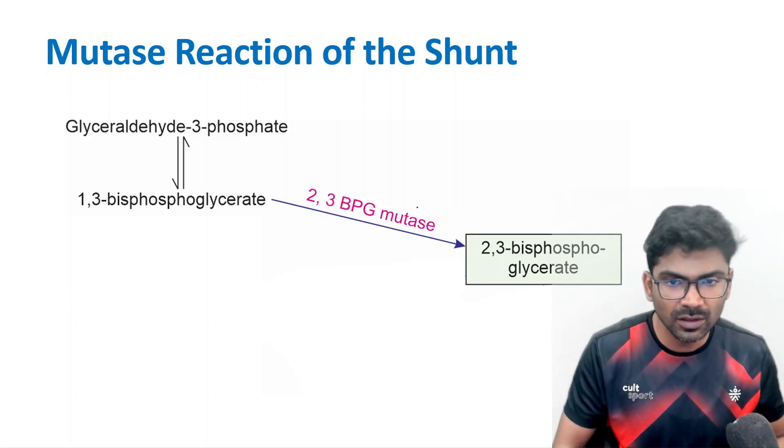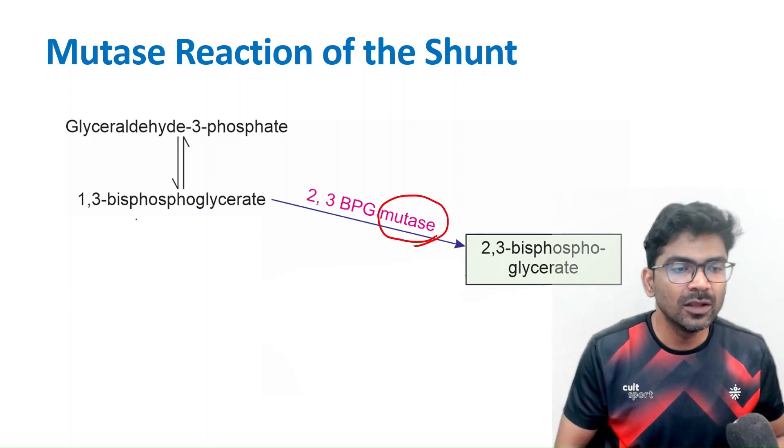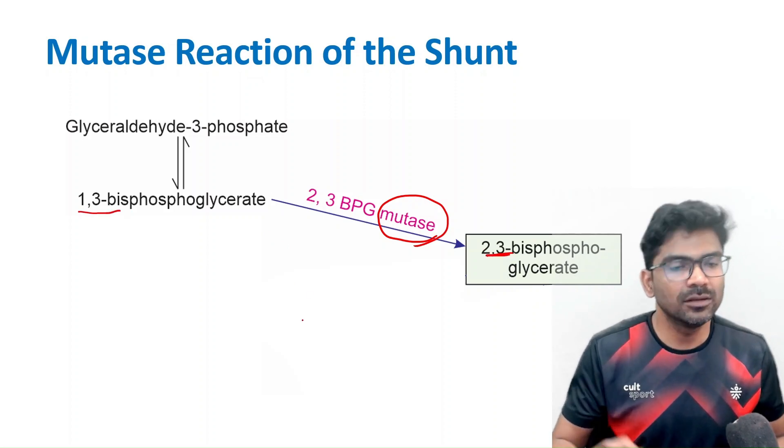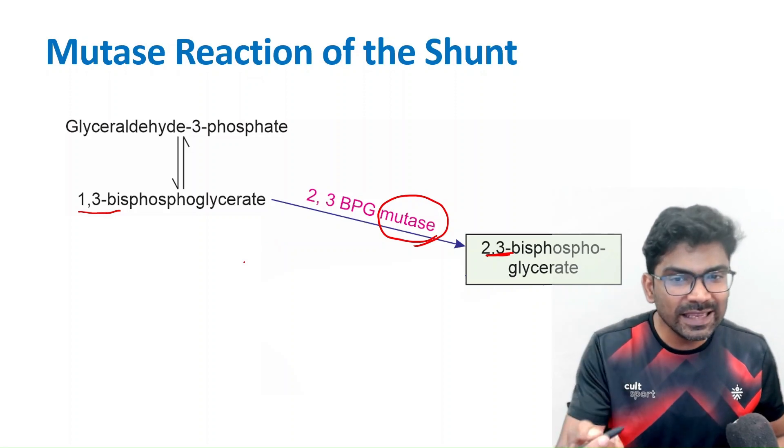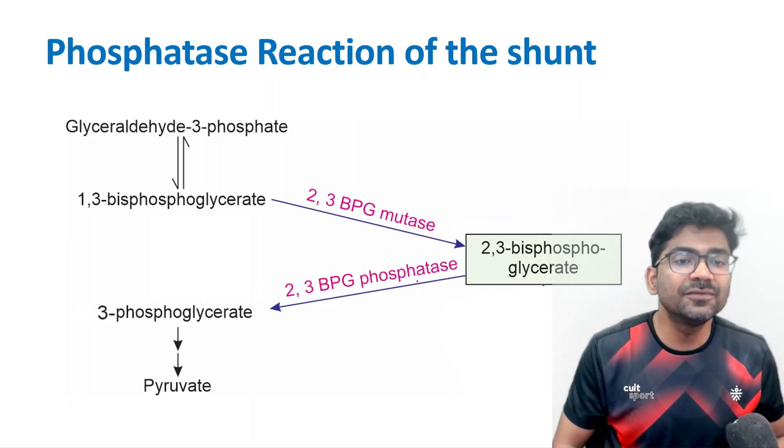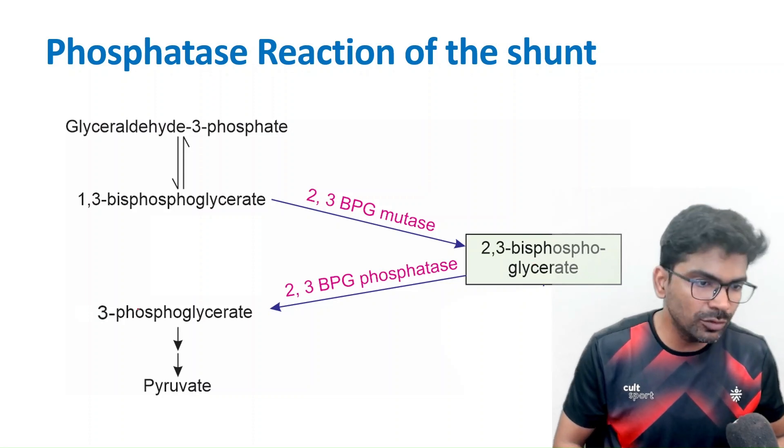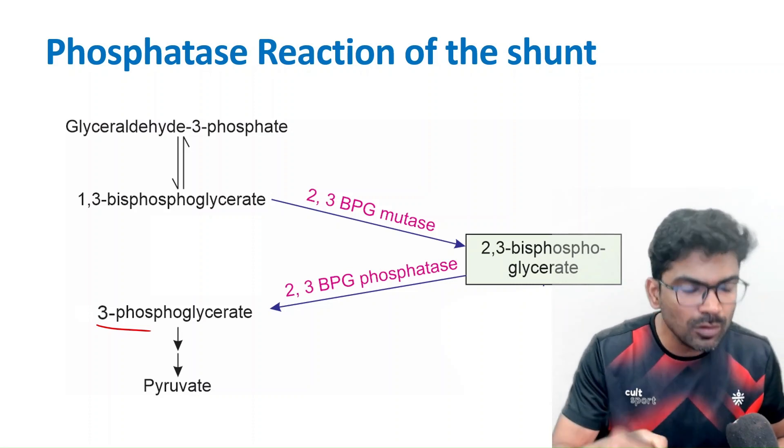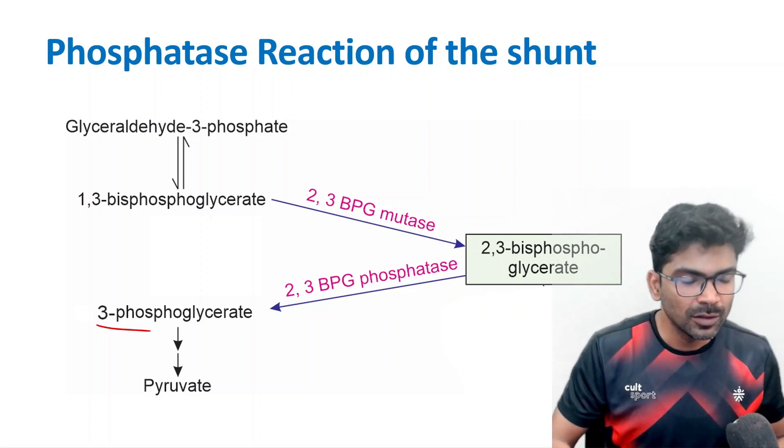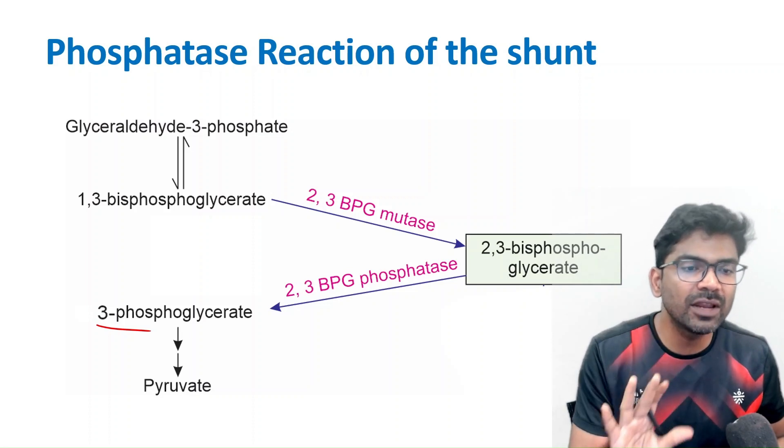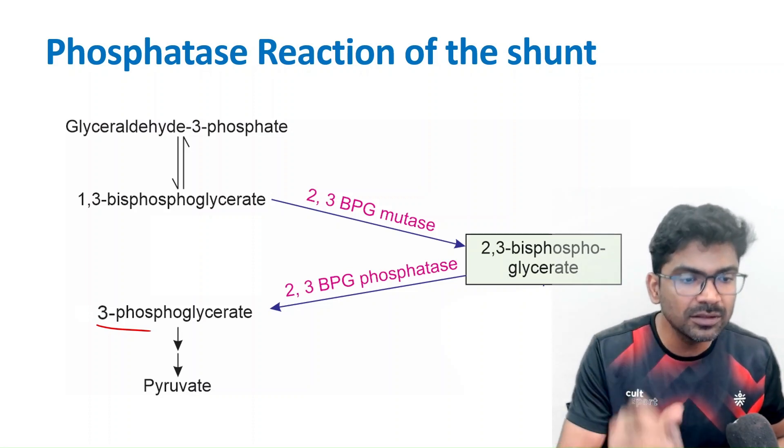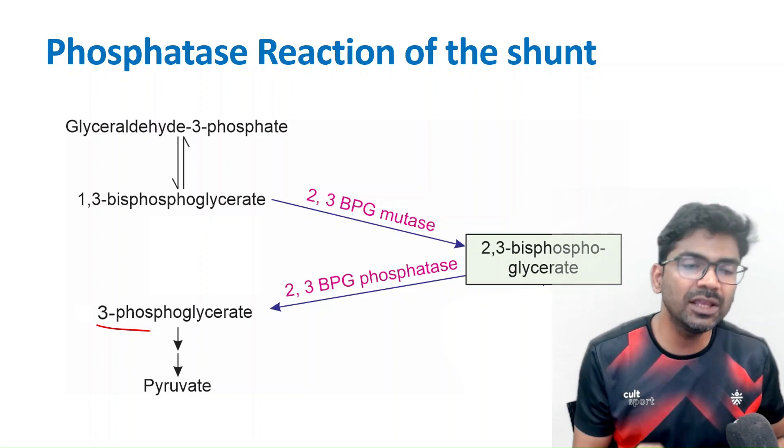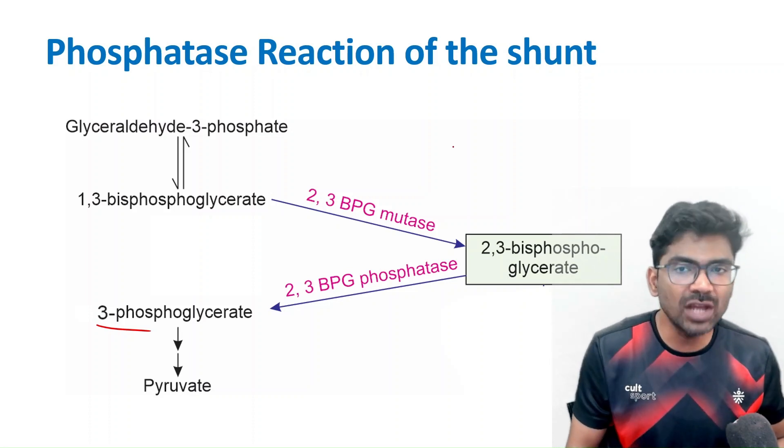There are two activities. The first activity is mutase activity, converting 1,3-BPG to 2,3-BPG. What is the second activity? That is phosphatase activity, converting 2,3-BPG back to 3-phosphoglycerate, so that it will come back to glycolysis. Just a single step of glycolysis is skipped and glycolysis continues. That is why this is a glycolytic shunt pathway.